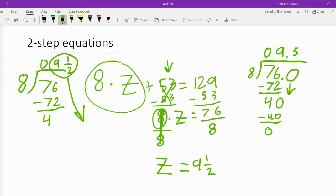Now how we're going to check that is we're going to start all over again. So we're going to go 8 times 9 and 1 half plus 53 equals 129. So now we're going to check this. So 8 times 9 is 72. Now what's half of 8? Half of 8 is 4.